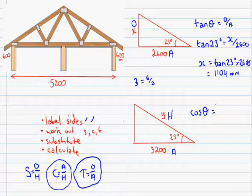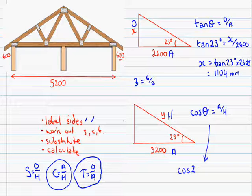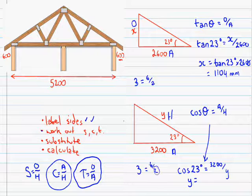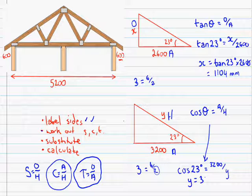So I'll write that down. Cos theta equals A over H. I'm going to continue this down here actually. Cos 23 degrees equals the adjacent, which is 3200, over the hypotenuse, which is y. I'll write my 3 equals 6 over 2. We're trying to find out the y. What we would do with 6 and 3 is go 6 divided by 3. So we're going to go 3200 divided by cos 23. 3200 divided by cos 23 degrees equals...